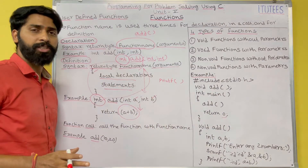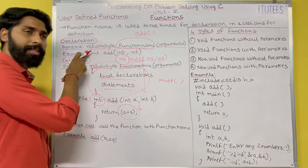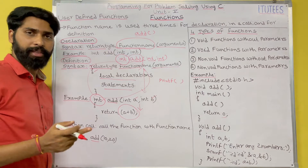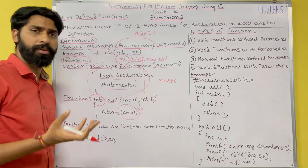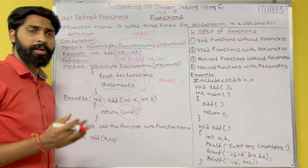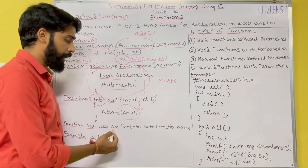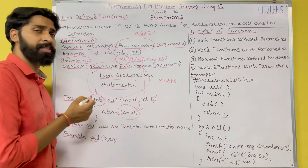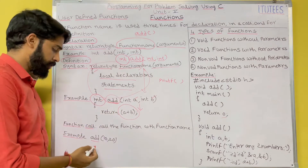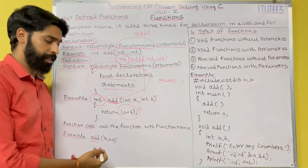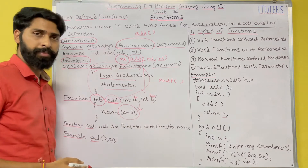This is about function definition. Whenever you want to define a function, first you declare it, then you define it. Now, function call: a function call is how you invoke the user defined function from the main function. You call the function using its name. The function name is 'add', so I call: add(10, 20) — 10 is stored in a and 20 is stored in b.